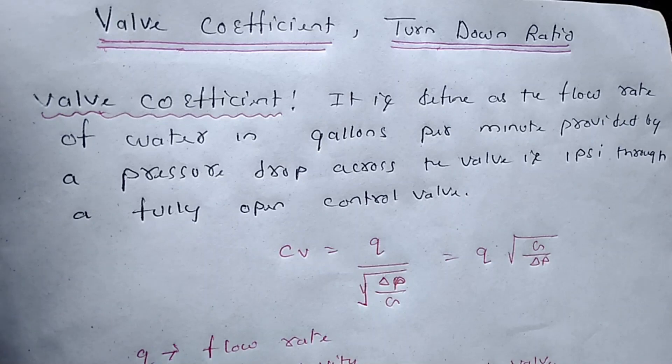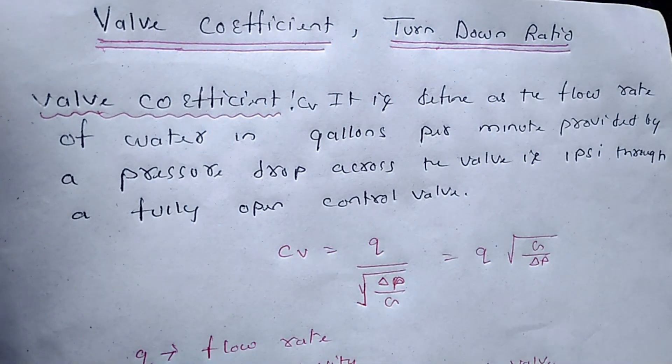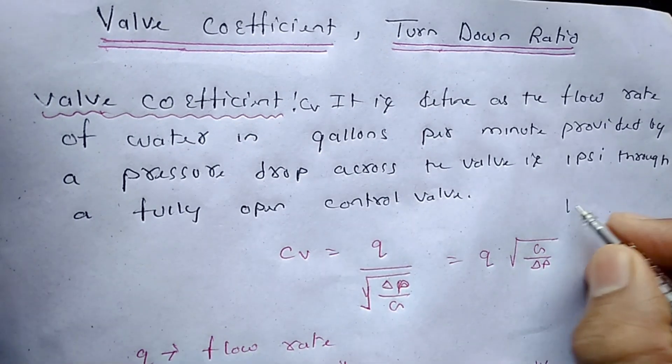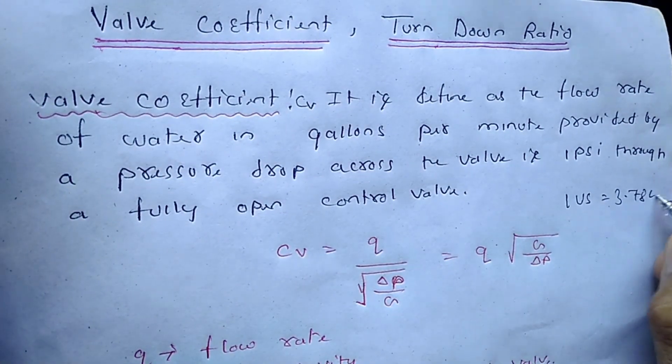So what is valve coefficient? That is denoted by CV. What is valve coefficient? It involves the number of U.S. gallons. What is U.S. gallons? 1 U.S. gallon equals 3.78 liters.